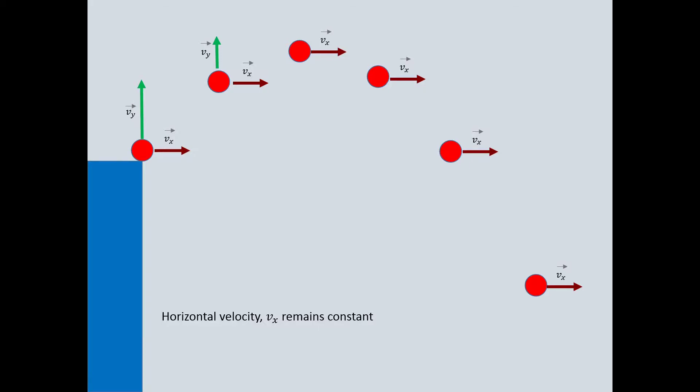The y velocity when it reaches the top of its path is zero because it stops before dropping. As it falls back down, the y velocity increases in the downward direction.